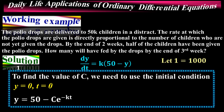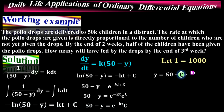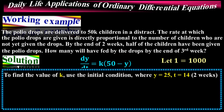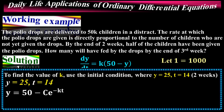Now to find the constant of proportionality k. The second initial condition is y = 25 at t = 14, since 14 is the number of days in two weeks and 25,000 children (y = 25) have been given the drops after two weeks. Substituting into the equation: 25 = 50 − 50·e^(−14k).